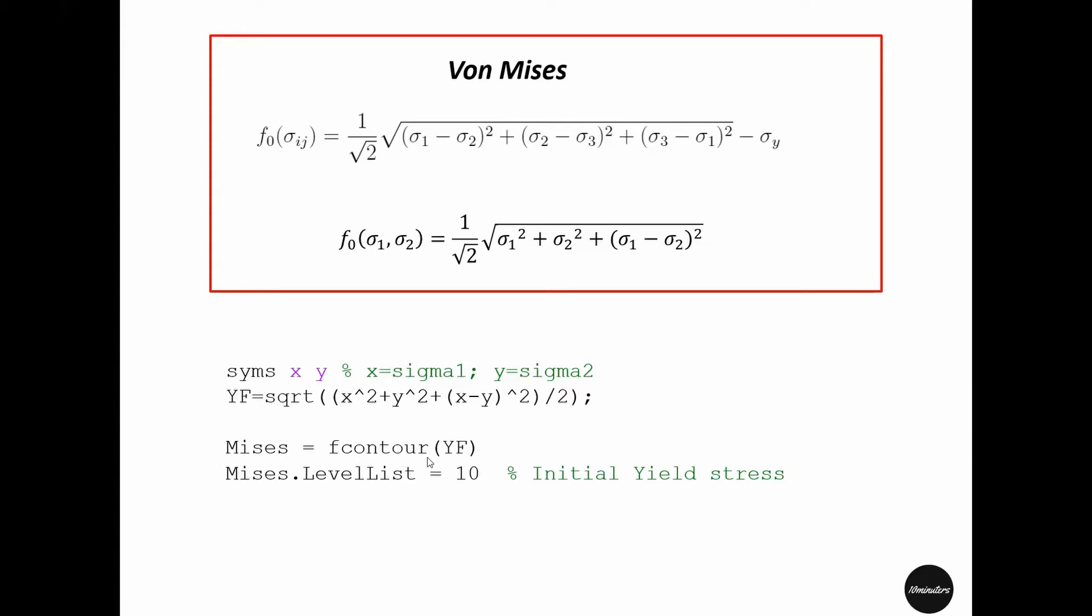This contour has multiple parallel curves. We are interested in the curve that has the level same as initial yield stress. So we set the level by calling the name of this contour dot level list and then equal it to the initial yield stress.